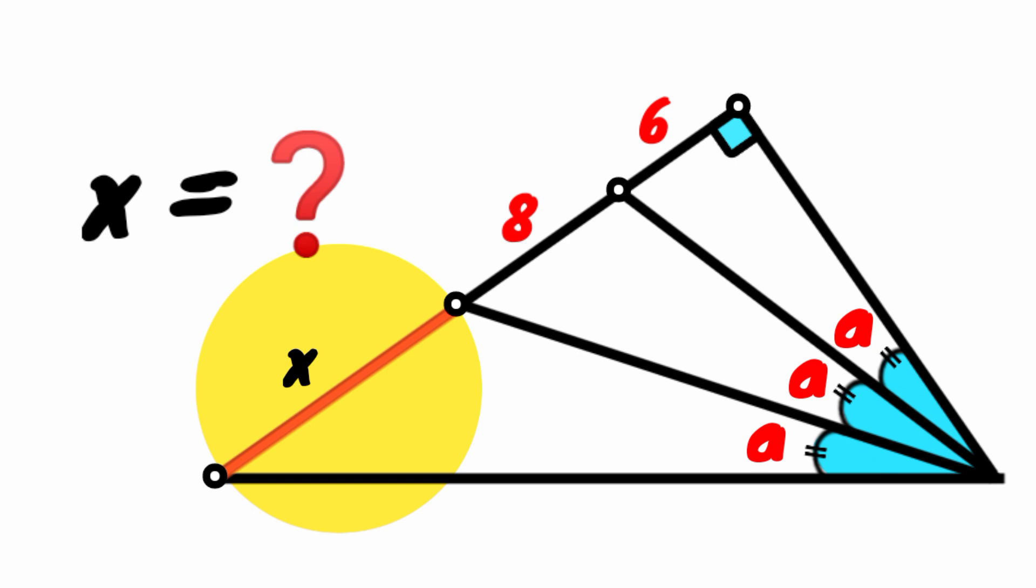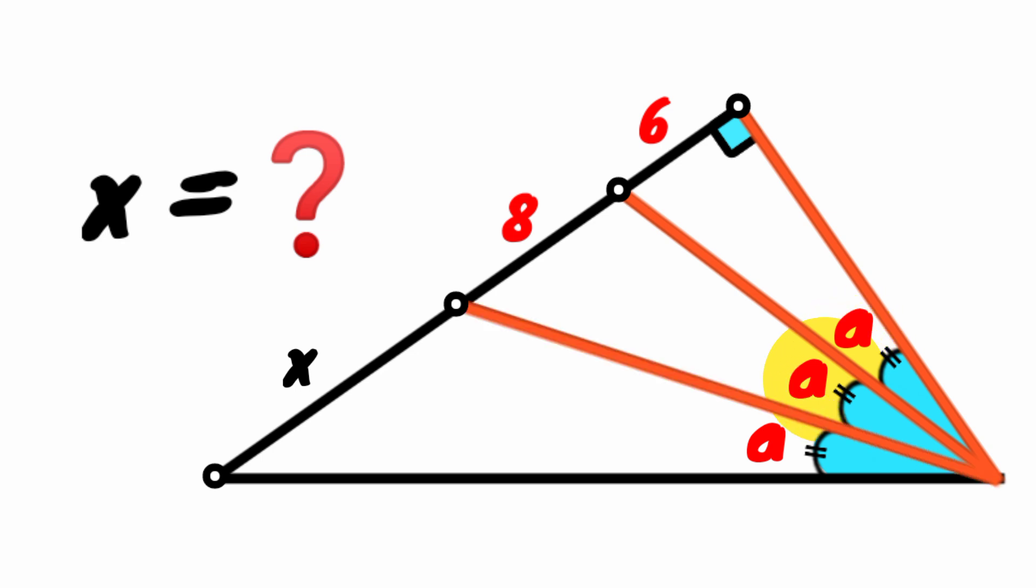We have that this is 8 and this is 6 units. This here is a right angle. If you come here, this angle has its size to be a, same is for this angle, its size is also a. Here too, its size is a. That is, the three angles are congruent.